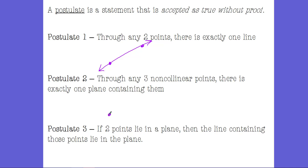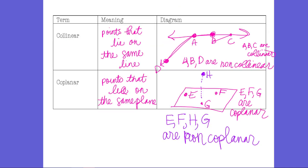Postulate two: through any three non-collinear points, they will all lie on the same plane. Going back to the co-planar discussion — I said E, F, and H were non-co-planar, but that's not quite right. I can draw a plane that connects E, F, and H. What I can't draw is one singular plane that holds E, F, H, and G.